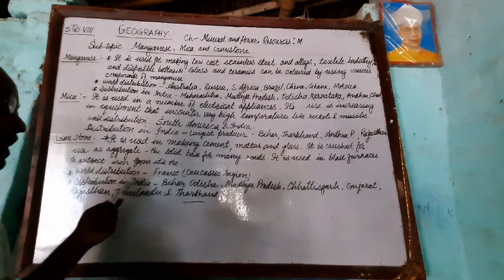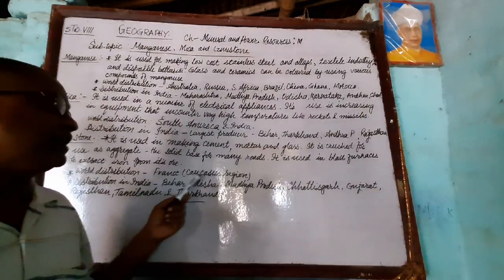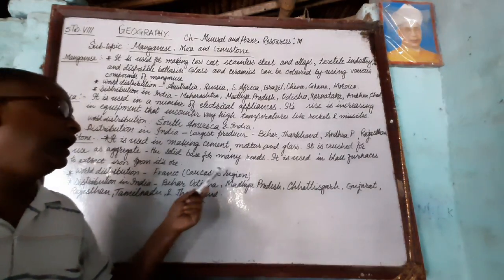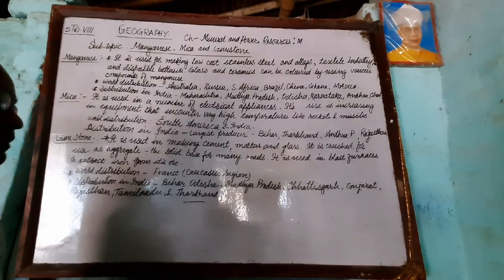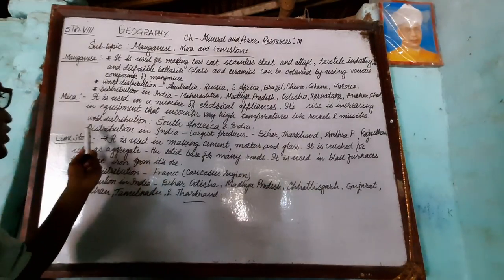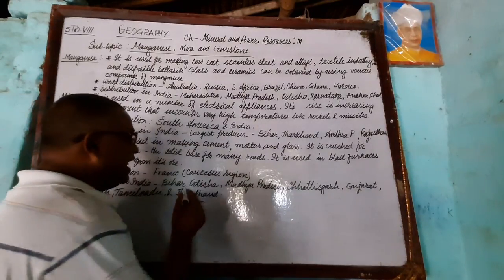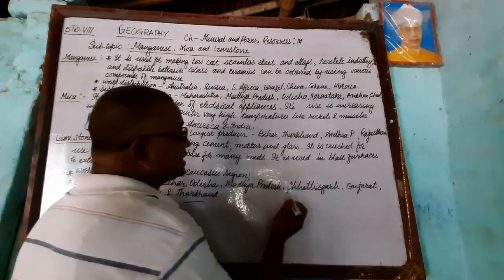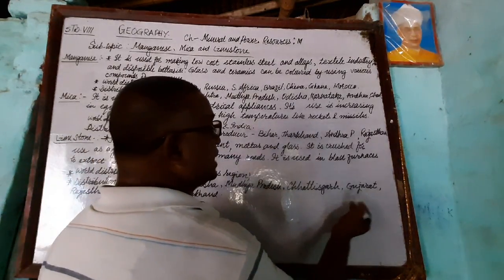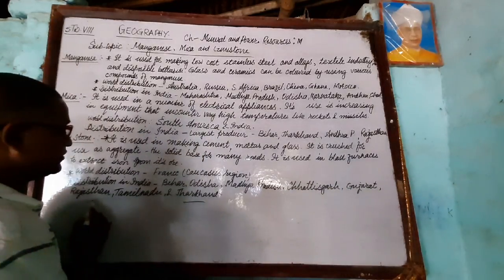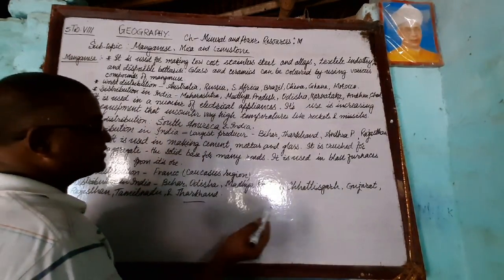For world distribution of limestone, India is one of the leading producers. Other regions include Japan, Korea, and Indonesia. In India, limestone is found in Bihar, Madhya Pradesh, Chhattisgarh, Gujarat, Rajasthan, Tamil Nadu, and Jharkhand.